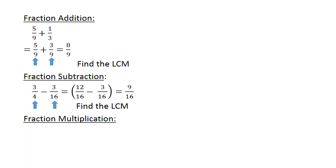Fraction multiplication: 2 over 3 times 4 over 6 equals. 2 times 4 equals 8. 3 times 6 equals 18. Simplified, this equals 4 over 9.